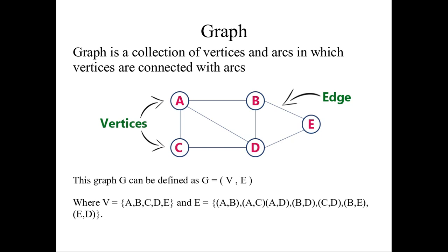We can tell it is a pictorial representation of nodes and edges. You can tell binary tree is also a graph. Here I have given one example which is having five nodes: A, B, C, D, E, and also connected with each other.